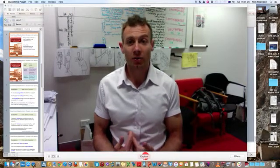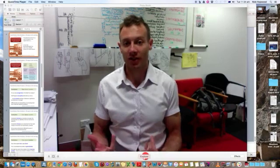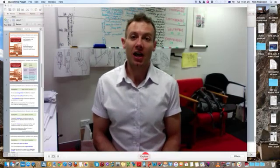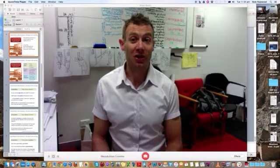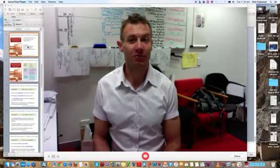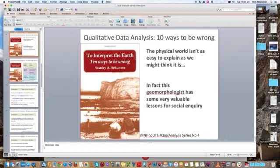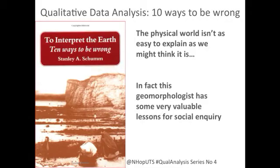There are 10 points so I'm going to go through them quite quickly, and I'd be really interested through interaction on Twitter or on my blog if you'd like to develop the discussion on any one or more of these things. I'm going to switch over to some slides now and come back to the video at the end. The book I'm going to talk about is 'To Interpret the Earth: 10 Ways to be Wrong' by Stanley Schumm. I read this when I was a geography undergraduate and I've come back to it many times since. I'm going to suggest there are real lessons from what Stan Schumm said about why interpreting the physical world is difficult, for us as qualitative analysts interpreting data about the social world.